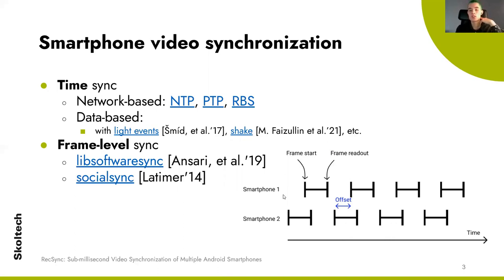Here in the picture you can see the problem illustration. There are two camera streams which are slightly shifted from one another. There is an offset, which means that they are out of phase, and the goal is to minimize this offset.